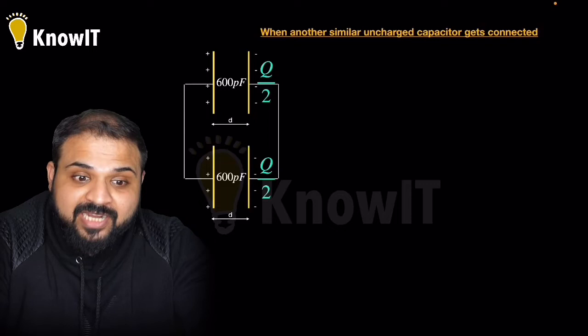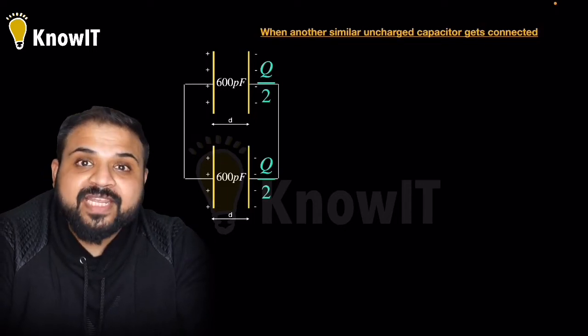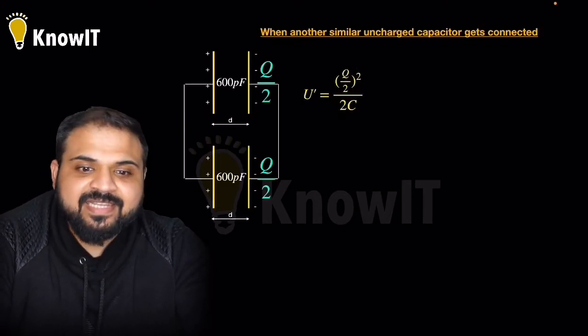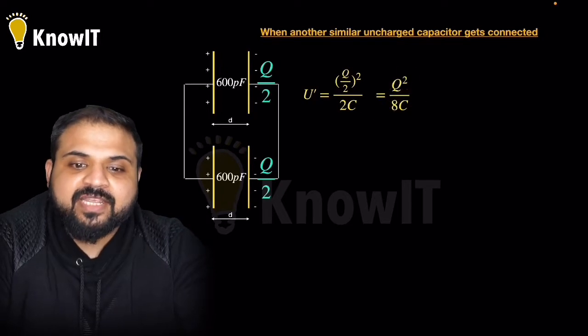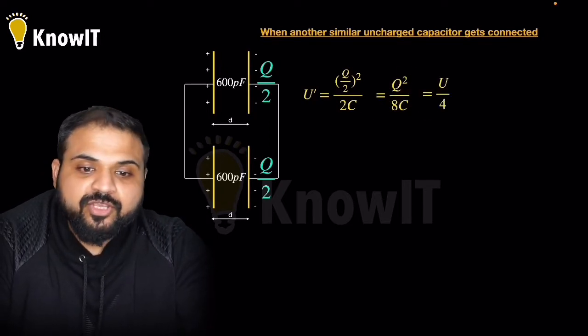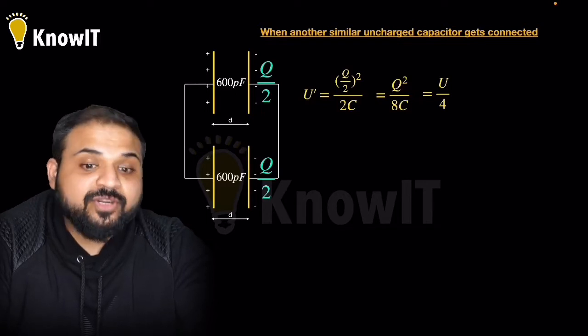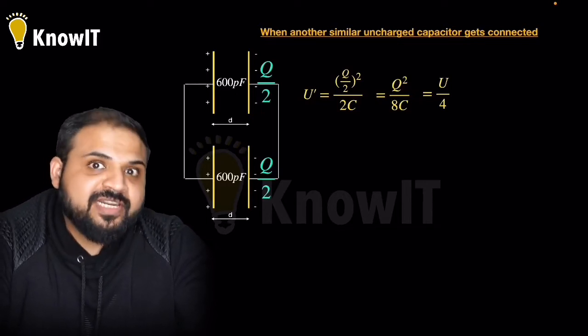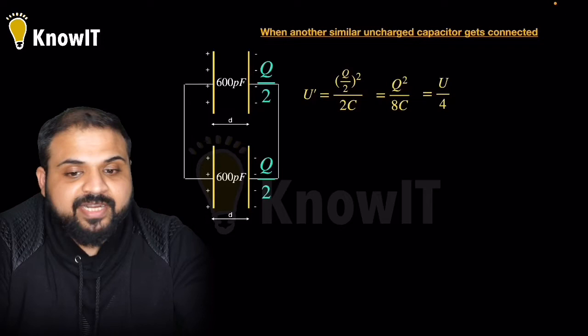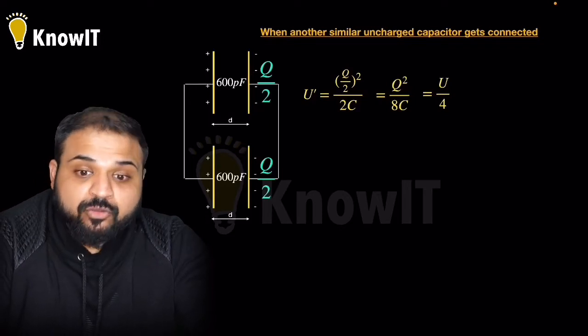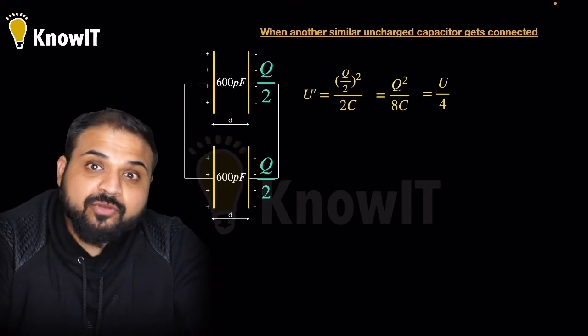The capacitance value is the same, so the charge becomes Q by 2, Q by 2. Because of this, energy becomes U by 4. Because Q by 2 squared is Q square by 4, 2C means whatever initial energy was Q square by 2C becomes 8C. So your energy is reduced and becomes one fourth of the initial part.